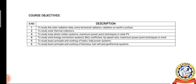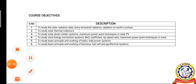CO5: to study the basic principles and working of hydro and tidal power systems. CO6: to study the basic principles and working of biomass, fuel cell, and geothermal systems. Now moving to course outcomes.